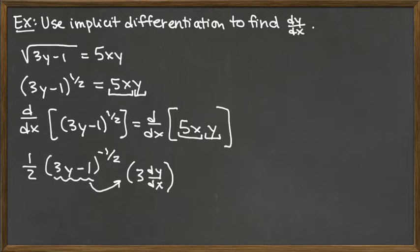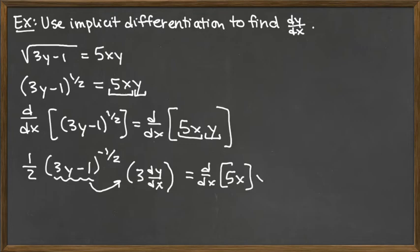We've worked pretty hard, but we only have the derivative of the left hand side. Now we've got to do the same for the right hand side. That derivative is going to be a product rule, so we have the derivative of the first term — d/dx of 5x — times the second term y, plus the first term 5x times the derivative of the second term y.